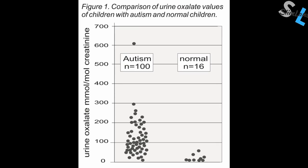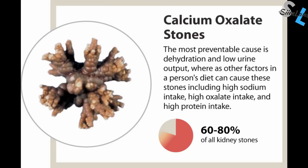Some people think that oxalates contribute to autism, but there are no studies that link these connections. Oxalates get formed as a byproduct of normal metabolism already, but consumption of too many oxalates may cause kidney stone formation and digestive issues. About 80% of kidney stones are made of calcium oxalates. Oxalates get created by metabolism all the time, and your red blood cells can also synthesize oxalates.